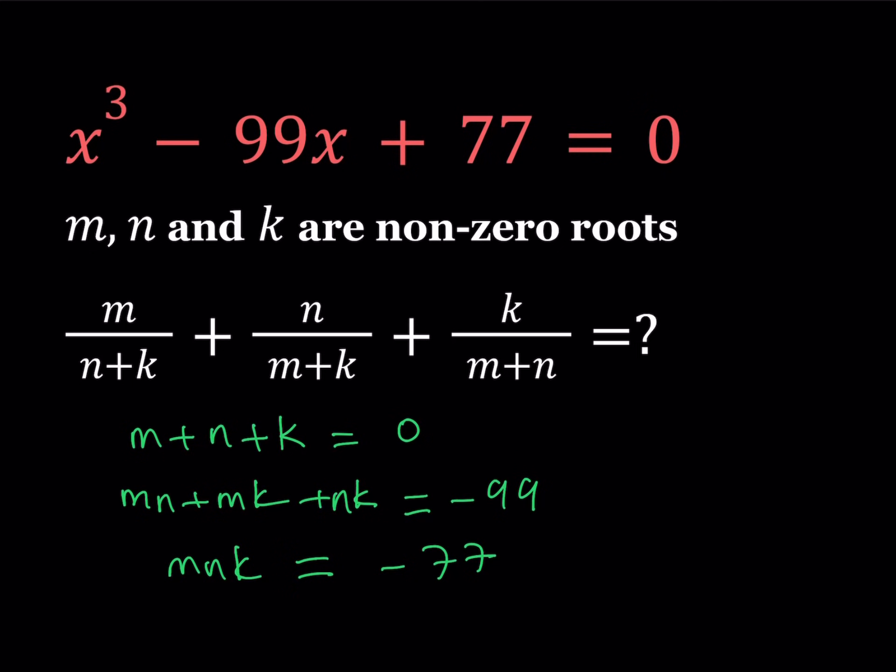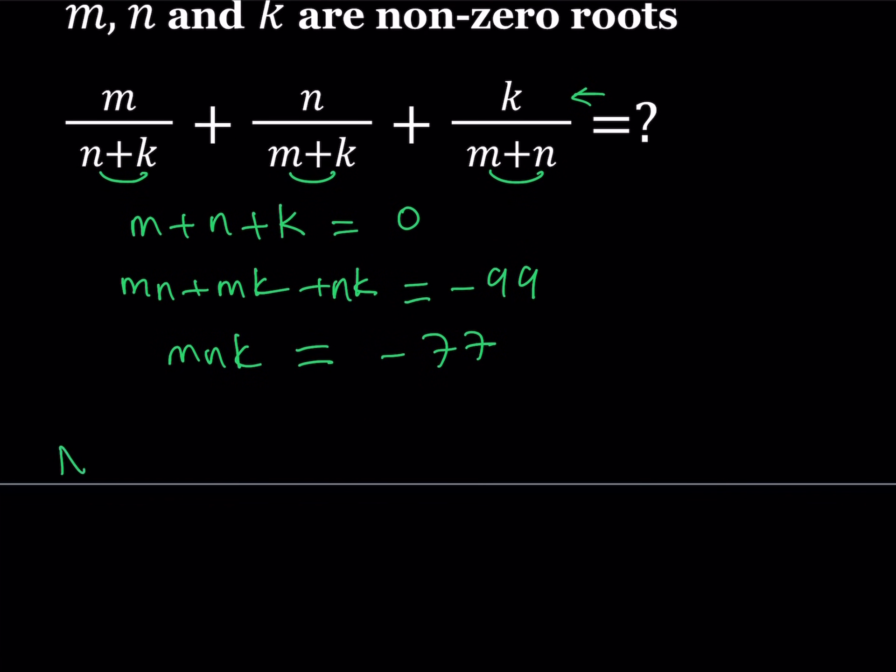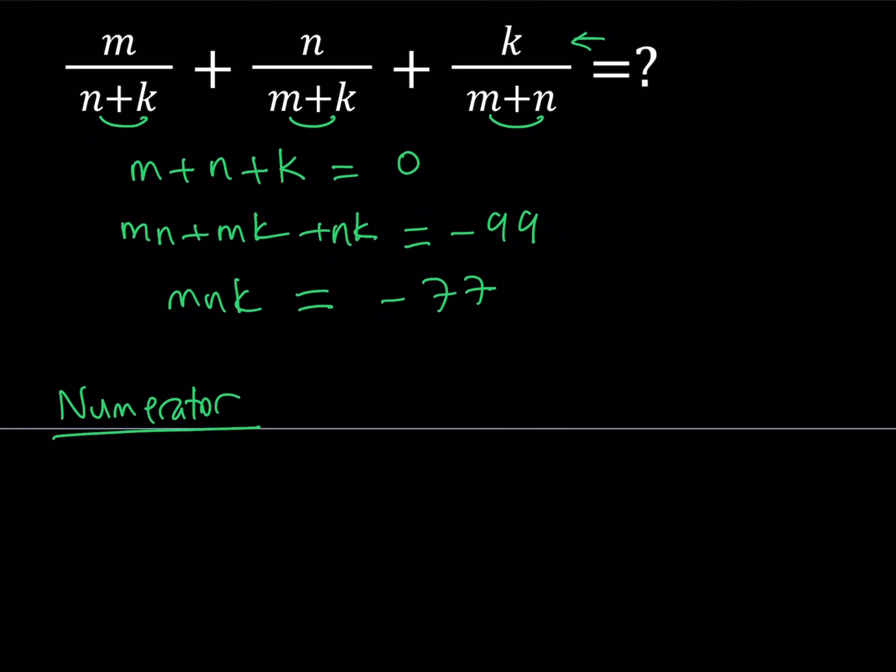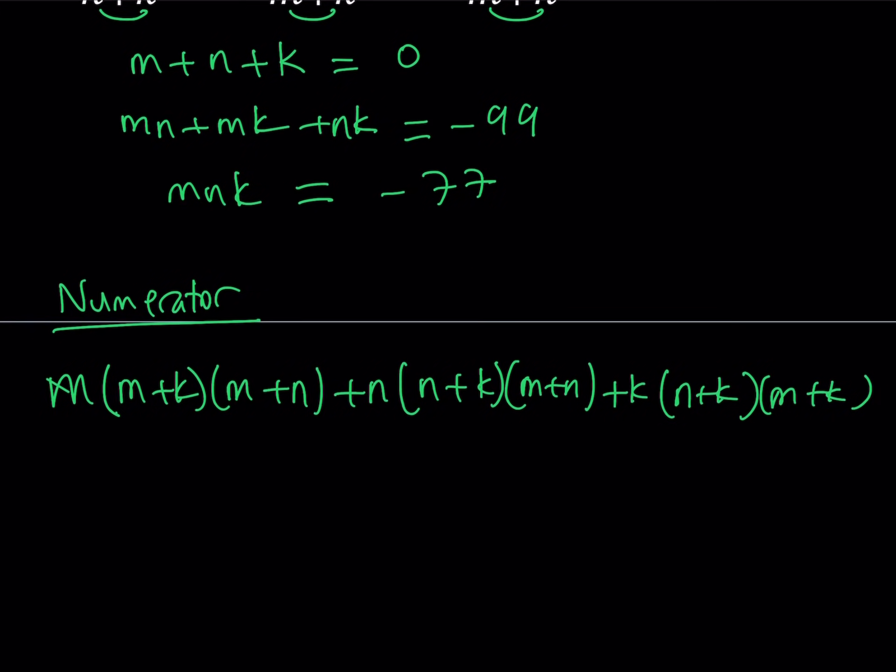So I'll make a common denominator. The common denominator is basically the product of all these things. So let's go ahead and do the following. Since this is a complicated expression after making a common denominator, let's go ahead and focus on the numerator first. So I will be simplifying the numerator and denominator separately here. The numerator is going to look like the following. I will have M multiplied by M plus K times M plus N, and then I'll have N multiplied by N plus K times M plus N, and then finally K will be multiplied by N plus K times M plus K.